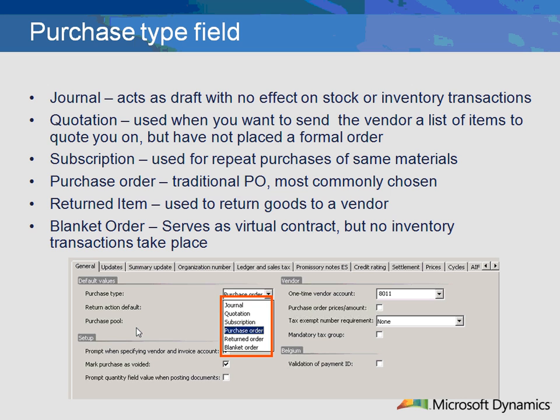Subscriptions act as a specialized purchase order for repeat ordering of the same materials. Returned orders are for the return of goods from a supplier. Blanket orders are virtual contracts to agree to buy certain materials over time. Since this field drives what the default purchase order type will be, it is most common to select Purchase Order for this field. This option represents the creation of a standard purchase order, and this default type can always be overridden upon order creation.